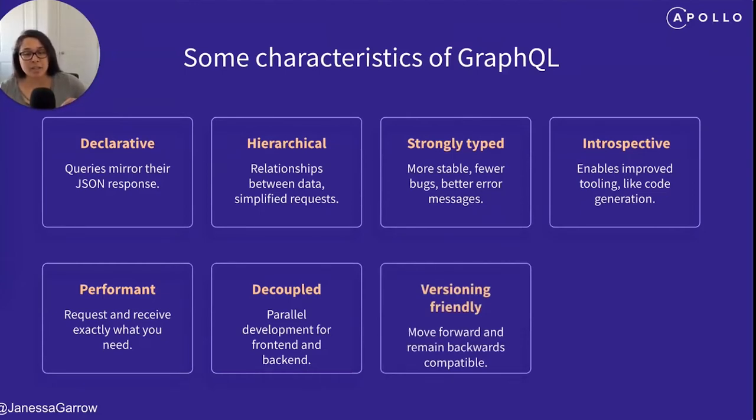GraphQL is also versioning friendly. It doesn't have versions in the same way that REST APIs do, but GraphQL allows you to add flags to different types and fields to let users know if something is being changed, such as a deprecation warning. This allows developers to both work on new features while still being backwards compatible as older features are gradually sunset.